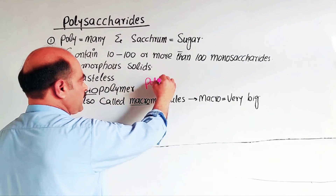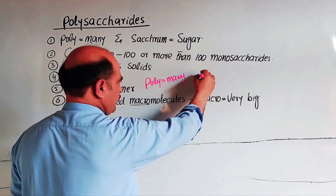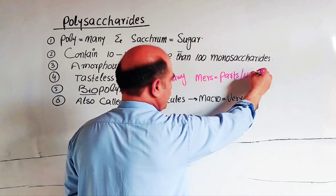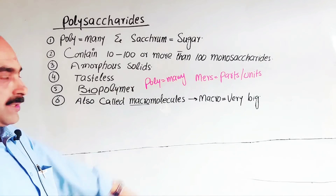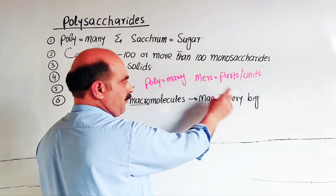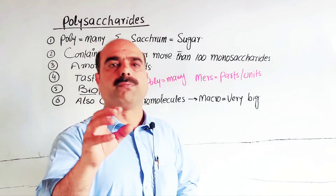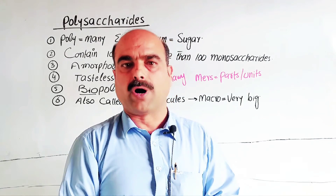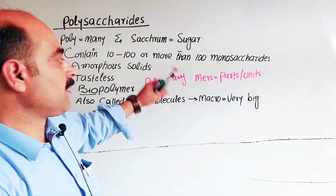What are macromolecules? What are biopolymers? Polymers: 'poly' means many, and 'mer' means parts or units — so polymers are made of many units combined into a large structure. Macromolecules are molecules of high molecular masses, usually greater than 10,000 AMU, and are called macromolecules or polymers.